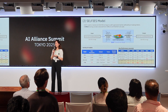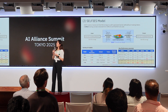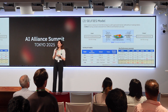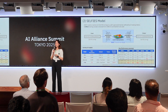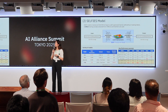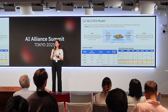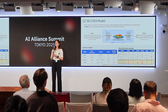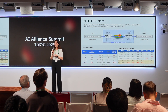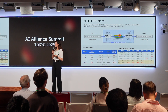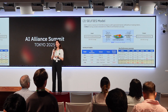Another model uses the SELFIES string representation of a molecule and is based on a bidirectional autoregressive transformer model. Again, we have different model sizes and improved performance over other models.